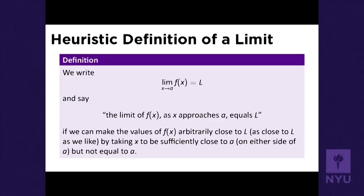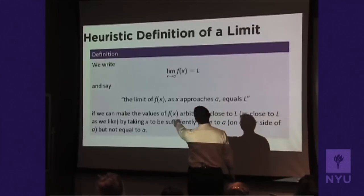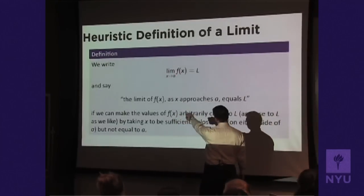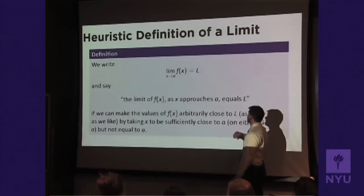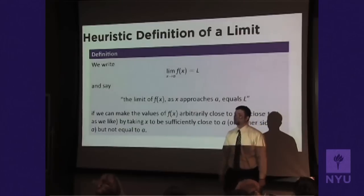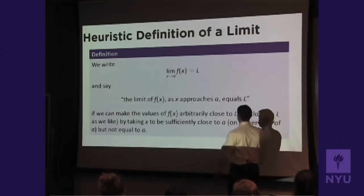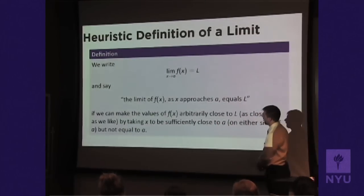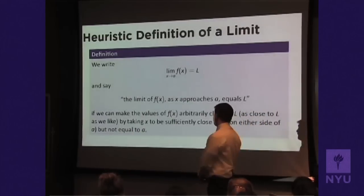So now we'll write it in a definition form. We write: the limit as x goes to a of f(x) equals L, and say the limit of f(x) as x approaches a equals L, if we can make the values of f(x) arbitrarily close to L — that is, as close as we like — by taking x to be sufficiently close to a, but not equal to a.